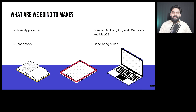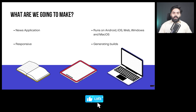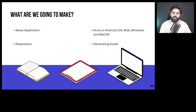First, we will be building a news application that will fetch the latest news from the newsapi.org website and show it inside our project. Secondly, we will be making it responsive. Using the same code, our application will run on Android, iOS, the web, and Windows — handling both wider screens on Windows and web, and narrower screens on Android and iOS.